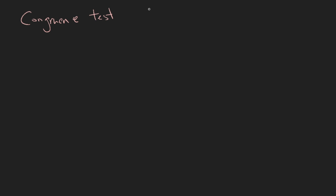Previously we learned that congruent figures have exactly the same shape and size. Now for this topic we will be focusing especially on triangles — specifically, how do we know that two triangles are exactly the same even though their orientation may be different.